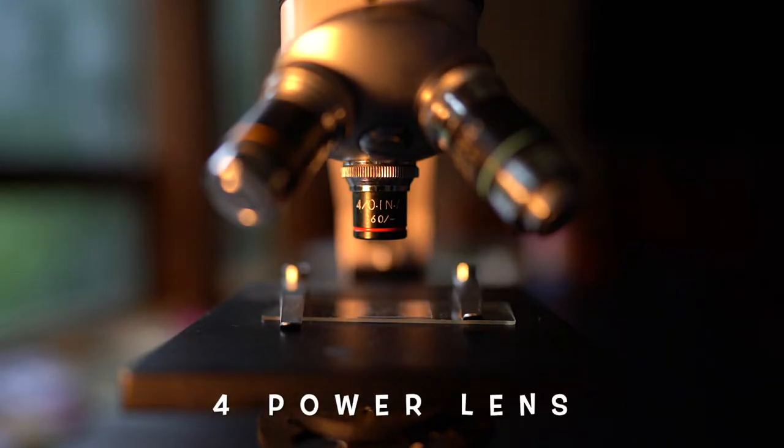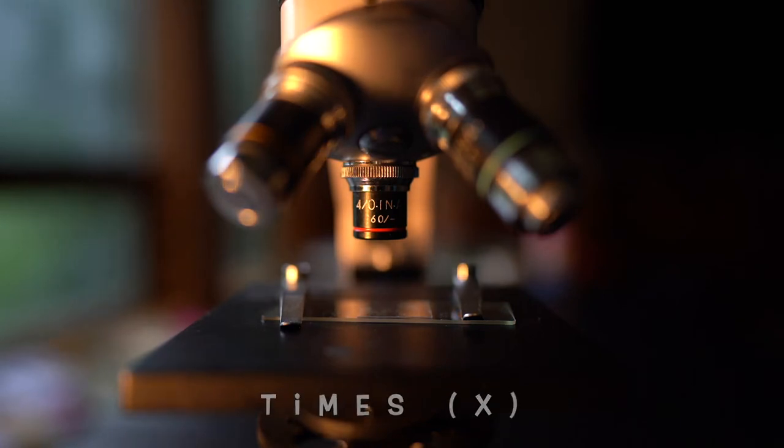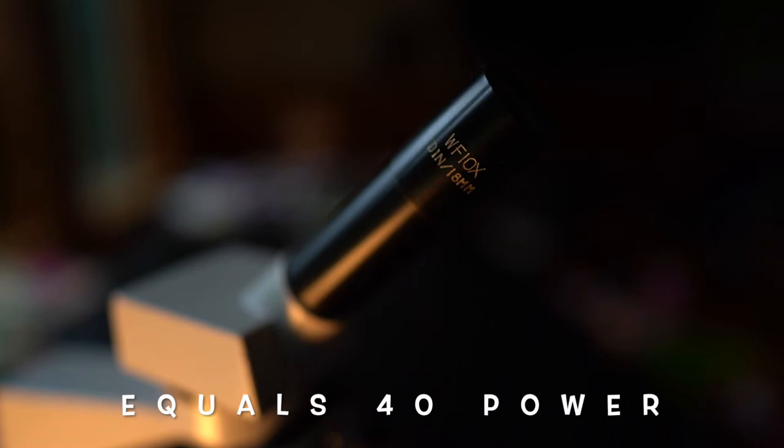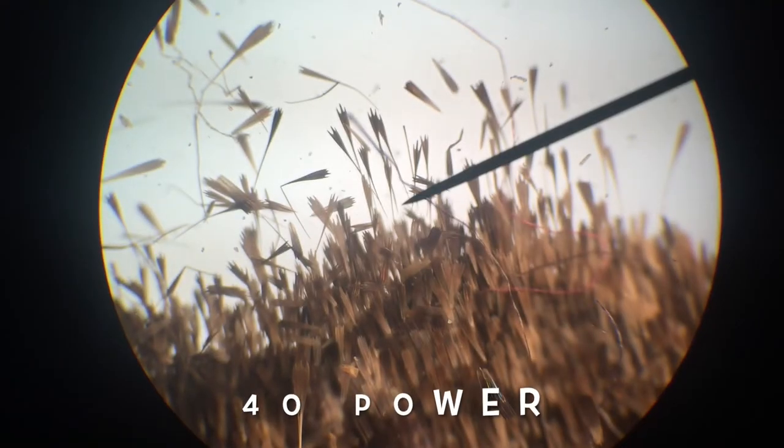To figure out how strong your field of view is, you'll take the lens, which is in this case 4x, times it by the eyepiece, which is 10x. 4x10 equals 40 power. So your field of view here is zoomed in 40 times.